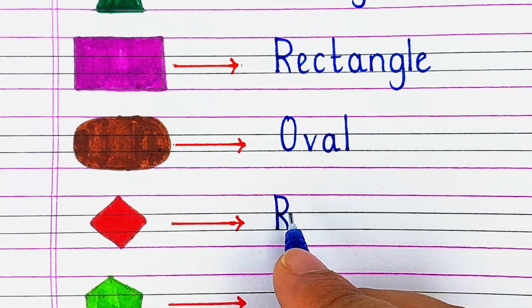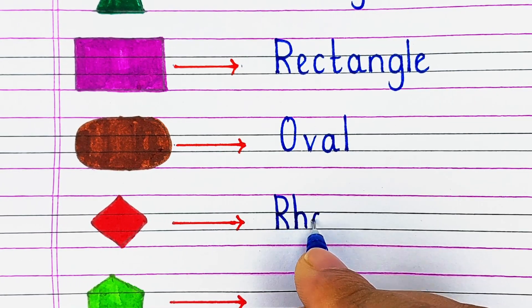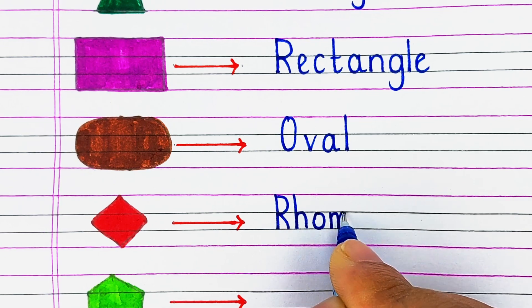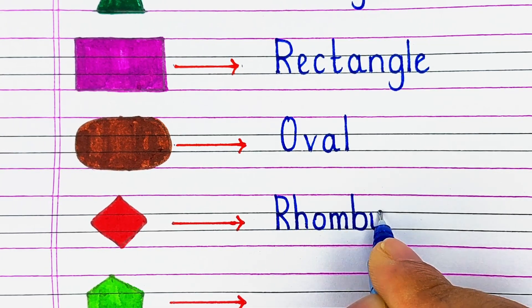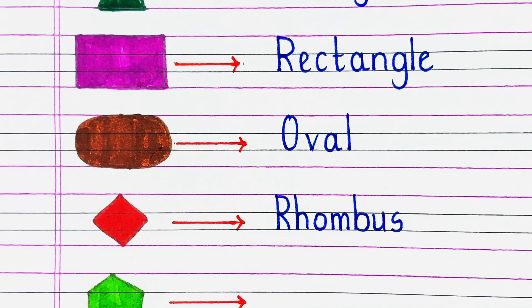Next is a shape with 4 sides in which 2 sides are parallel to each other. It is called a rhombus.